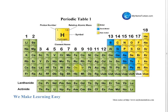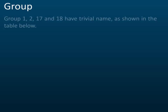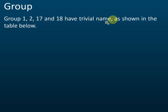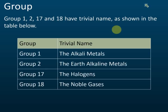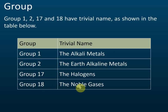Groups 1, 2, 17, and 18 also have trivial names. Group 1 is called alkali metals, Group 2 is alkaline earth metals, Group 17 is halogens, and Group 18 is noble gases.